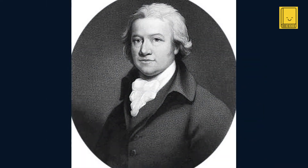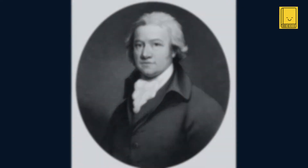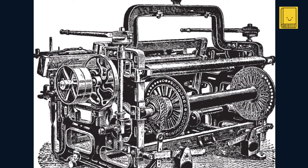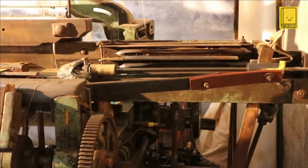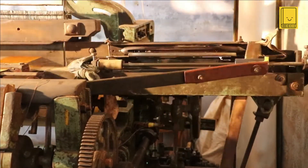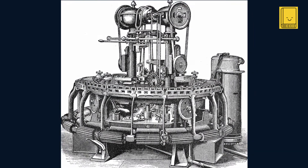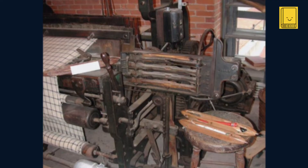Edmund Cartwright's life following his invention of the power loom in 1785 is a story of both innovation and struggle, marked by continued creativity but also financial difficulties. After inventing the power loom, Cartwright attempted to commercialize it but faced considerable challenges. The initial models were not very reliable and did not perform well, which hindered their acceptance in the industry, leading to significant financial difficulties as he invested much of his own money into perfecting and promoting his invention. Despite this, Cartwright continued to invent, patenting a wool combing machine in 1789 and a cordelia — a machine for making rope — in 1792, and even designing a steam engine that used alcohol instead of water. However, like the power loom, these inventions did not bring him much financial success.